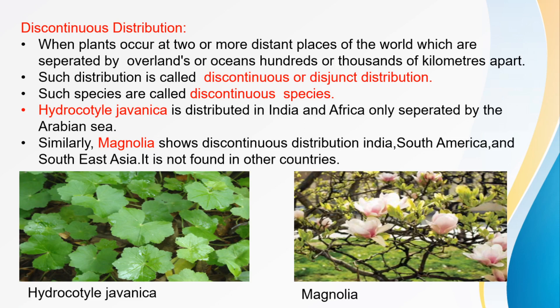For example, like the Indian Ocean or the Arabian Sea separating countries. Hydrocotyle javanica is a plant species distributed in both India and Africa, but India and Africa are separated by the Arabian Sea. So these regions are separate through the ocean, making it a discontinuous distribution.